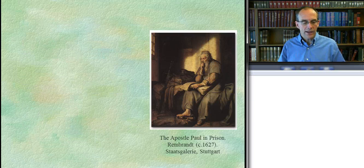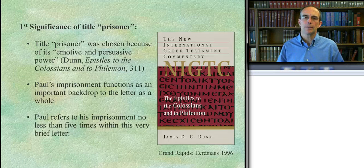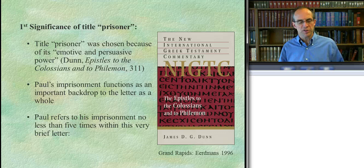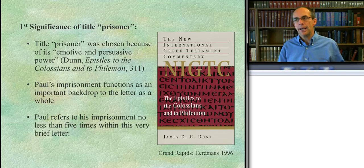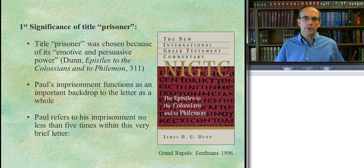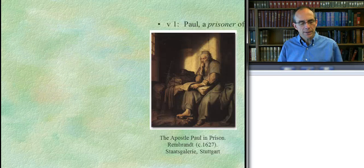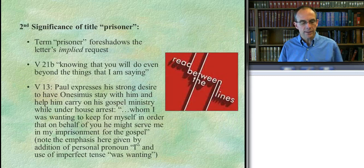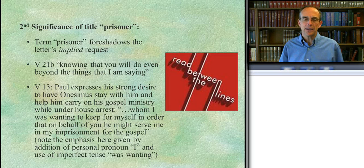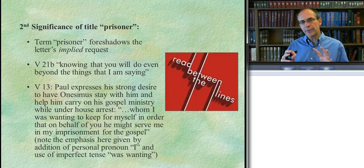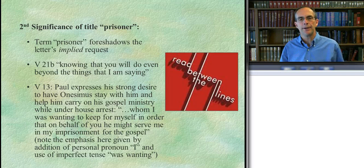Why? One answer — which I think is partly true but not completely so — is that it was chosen because of its emotive, persuasive power. Paul is not-so-subtly reminding Philemon that he's in a bad, vulnerable situation, in a position of need, and now he's asking something of him. A request made by somebody in need is harder to turn down than one from somebody who is not in need. But I think there's more: in addition to that, there's a second, maybe even more significant reason — I think it foreshadows. The change at the beginning of the letter foreshadows the implied or implicit request in the letter.